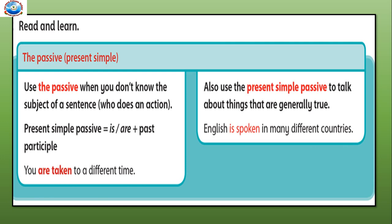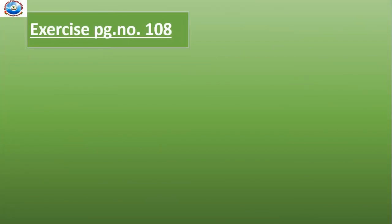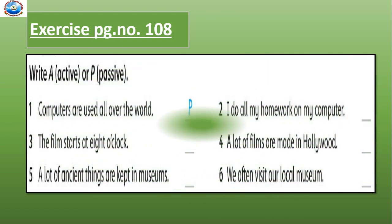Now let's do an exercise on page number 108. You have to write A for the active sentence and P for the passive sentence. The first one is done for you. Number 1: Computers are used all over the world. Here, are used — so it is a passive sentence, so we will write P.